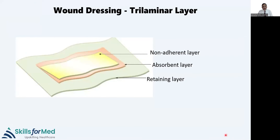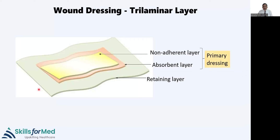A wound dressing should be trilaminar. The inner layer in contact with the raw wound should be non-adherent — it should not stick. Then you need an absorbent layer to absorb exudate. The third is the retaining layer. For example, a Gamgee pad dressing: put paraffin gauze as the non-adherent layer, then the Gamgee pad — thick wadding of cotton covered by gauze — as the absorbent layer, and then use a bandage or tape to retain it. The non-adherent and absorbent layers are the primary dressing; the retaining layer is the secondary dressing.